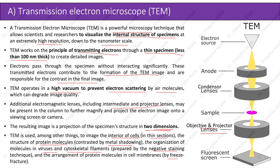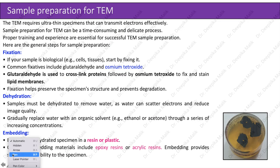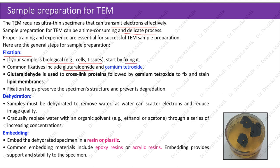Sample preparation for TEM: TEM requires ultra-thin specimens that can transmit electrons effectively. Sample preparation can be a time-consuming and delicate process, requiring proper training and experience. Fixation: if your sample is biological, such as cells or tissues, start by fixing it. Common fixatives include glutaraldehyde and osmium tetroxide. Glutaraldehyde is used to crosslink proteins, followed by osmium tetroxide to fix and stain lipid membranes. Fixation helps preserve the specimen structure and prevents degradation.